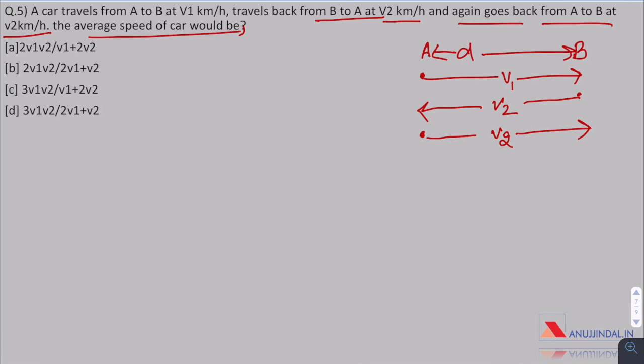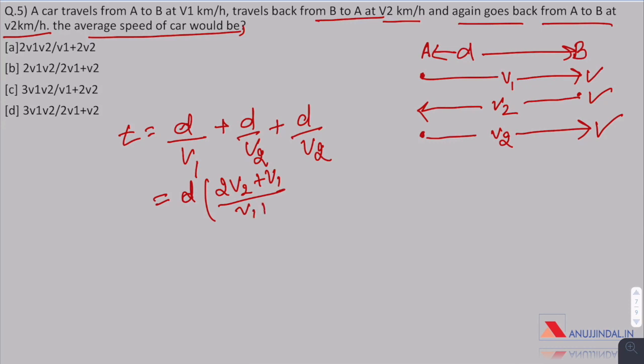Let us first calculate the total time would be time taken in this, this and this. Total time is equals to D by V1 plus D by V2 plus D by V2. On taking the LCM, we get 2V2 plus V1 upon V1 V2.